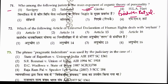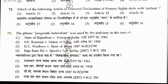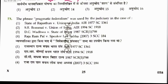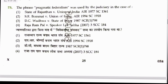Question 72: Which article of the Universal Declaration of Human Rights deals with asylum? Asylum is in Article 14. Next, Question 73: The phrase 'pragmatic federalism' was used by the judiciary in the case of S.R. Bommai vs. Union of India. That is the answer.